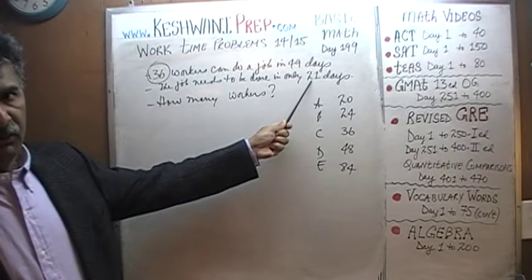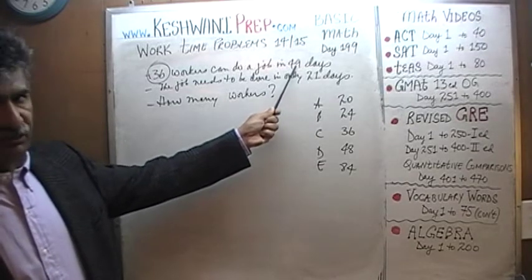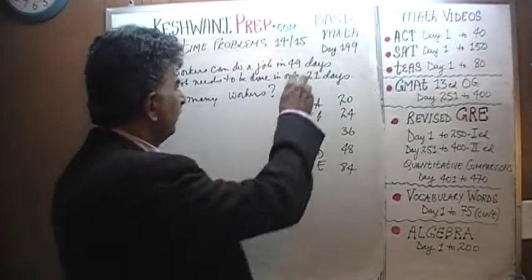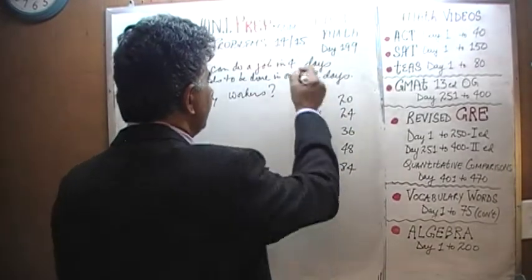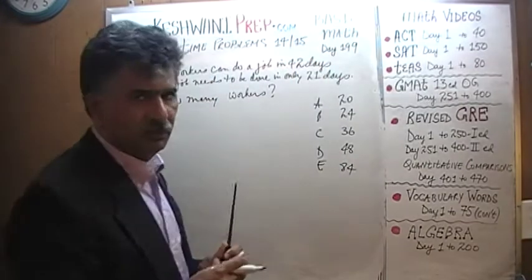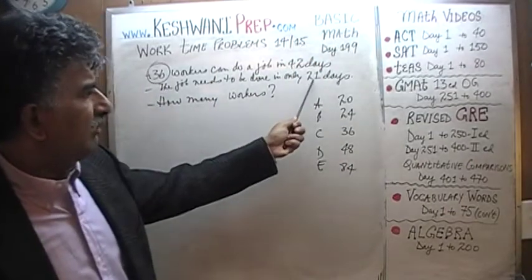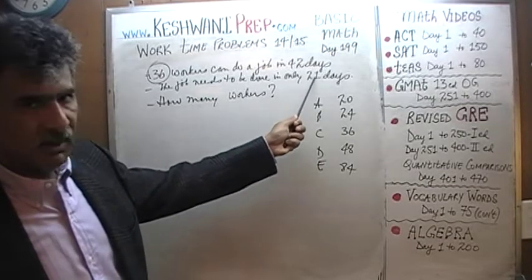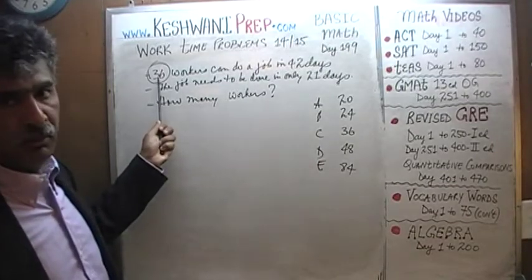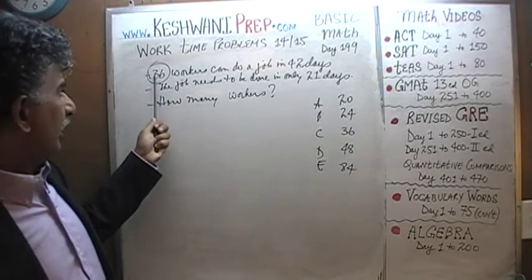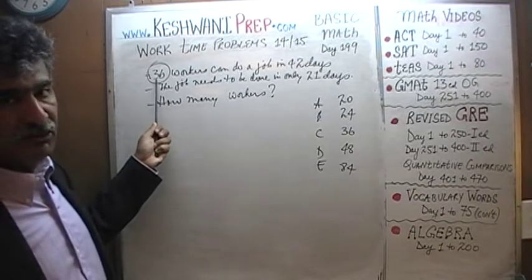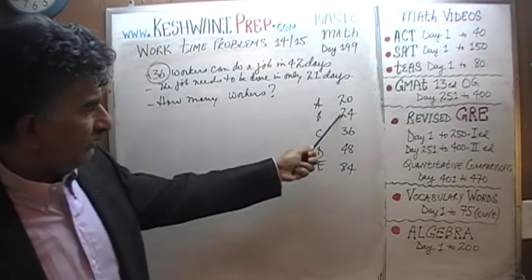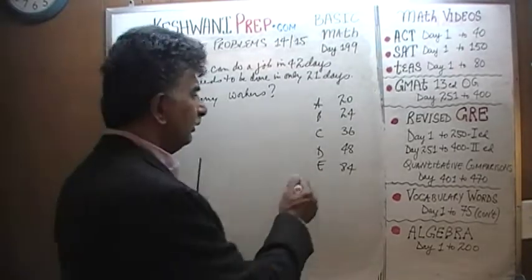If you want to finish the job in 21 days, listen carefully: even if you were to change that to 42 days — even in that case — if you give me half the amount of time (42 divided by 2 is 21), I will need twice the workers. Twice of 36 is 72, which means all the answer choices that are less than 70 are all wrong.